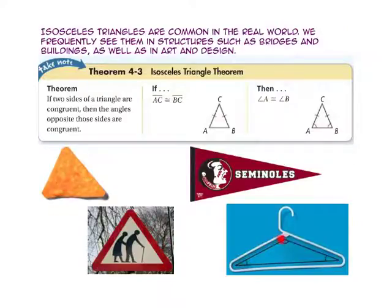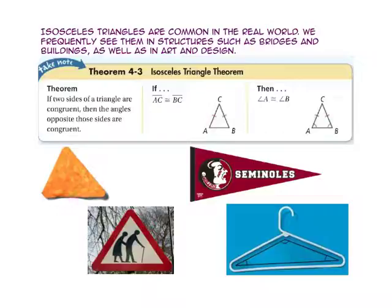The Isosceles Triangle Theorem states that if two sides of a triangle are congruent, such as side AC and side BC, then the angles opposite those sides are also congruent. So here, angle A is opposite side BC, so it is congruent to angle B, which is opposite side AC.